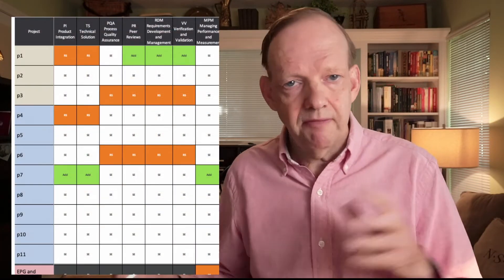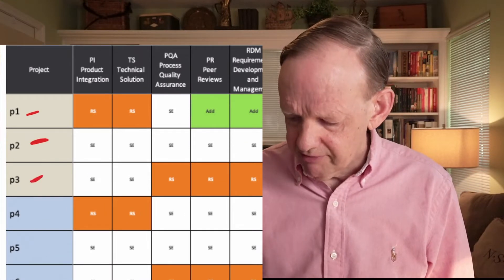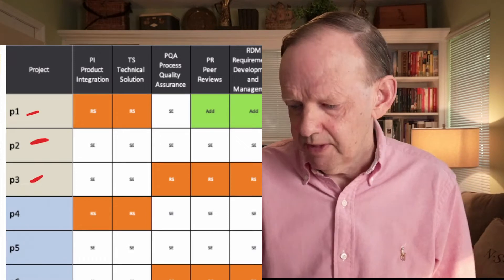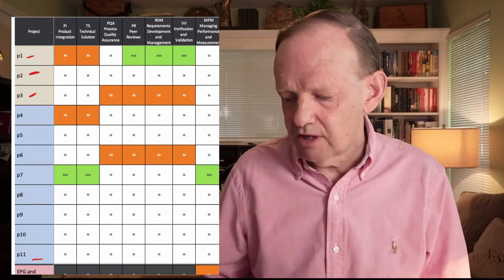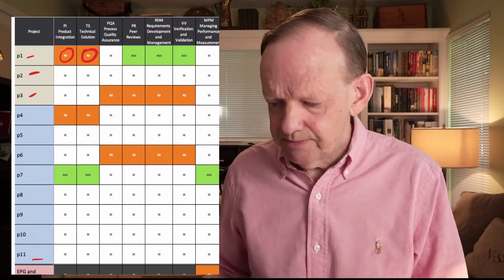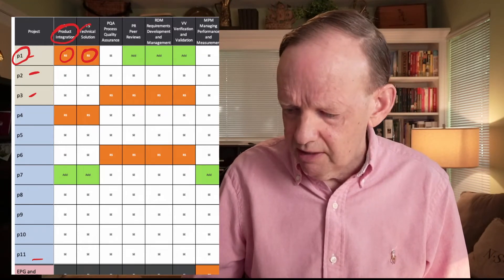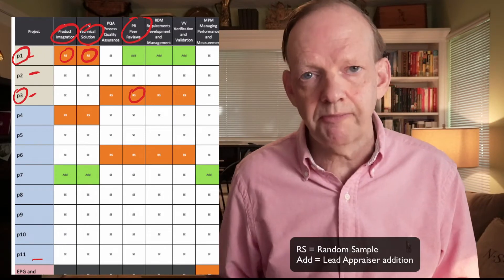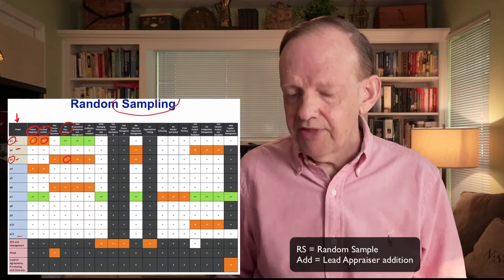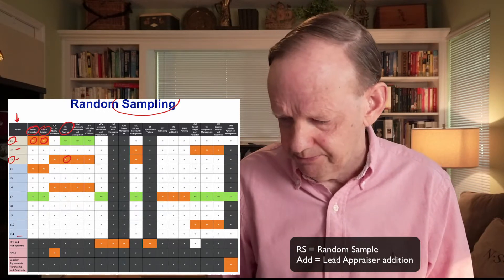In the appraisal planning activity we do sampling — we don't look at every project for every practice area. We come up with a sample. Typically about two months before the appraisal, I work with the company to figure out the list of projects — maybe they have eleven projects, maybe less or more. I submit those to the Institute through a web system called PARS or CAS, and that system will then sample what to look at.